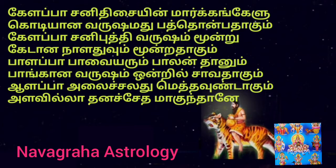Sage Pulipani says that the entire duration of Saturn Dasha is for 19 years. When he says Saturn Dasha is for 19 years, it is very clear that he is talking only about the Vimshottari Dasha system. So we should not apply his teachings for any other Dasha system like the Yogini Dasha or Ashtottari Dasha. In the 3rd and 4th lines, he says that in Saturn Dasha, the total duration of Saturn Antar Dasha is for 3 years and 3 days.